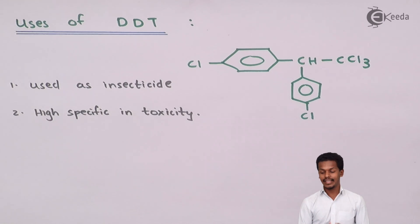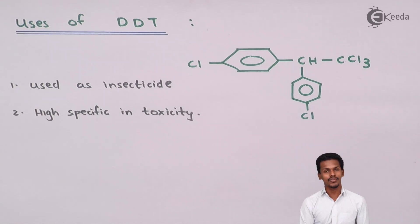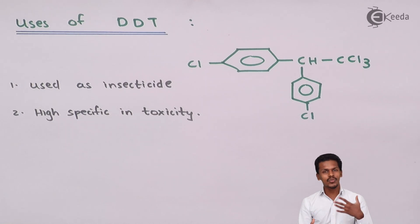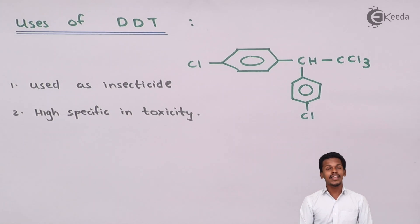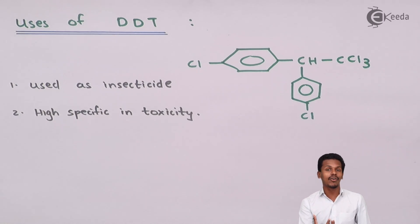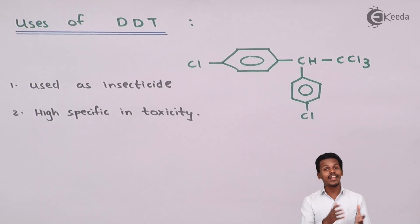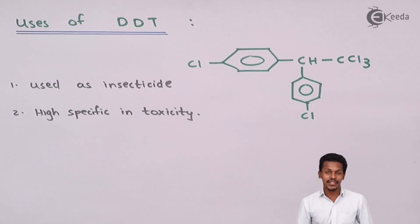DDT is used as a repellent for mosquitoes and houseflies, and it is also used in fertilizers in fields — for example in sugarcane fields to protect cultivation from insects. However, the problem is that this compound is not biodegradable. When used as an insecticide in farms, it deposits in the soil and does not biodegrade, remaining as-is and affecting the ecological system. This can ultimately affect us as well.